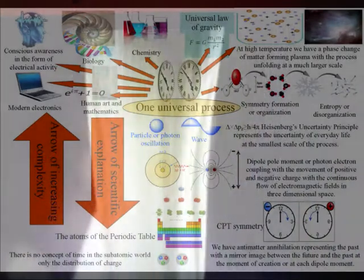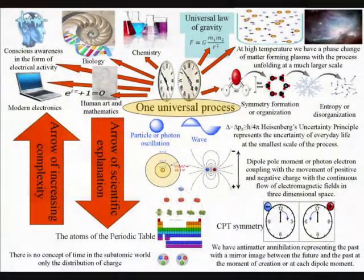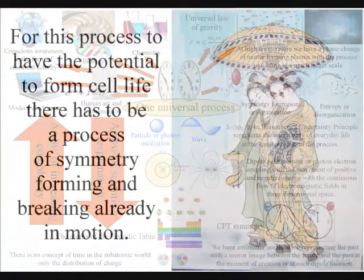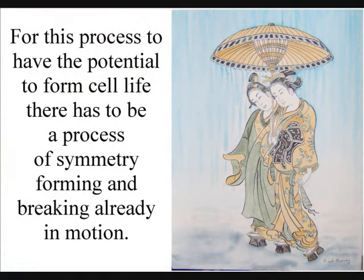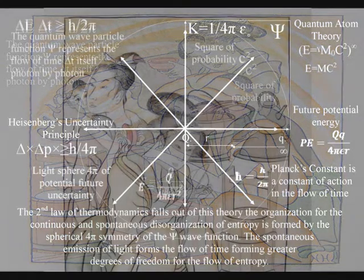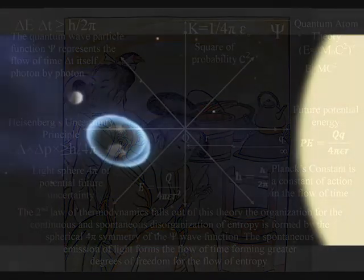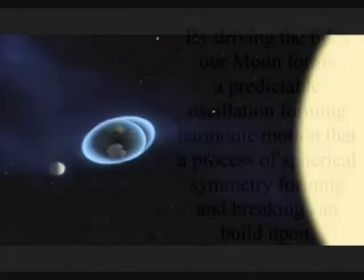The problem is, for this process to have the potential to form cell life, there has to be a process of symmetry forming and breaking already in motion. Otherwise, the process would just form entropy or disorganization in three dimensions. For the earth, this symmetry was in the form of the lunar cycle, forming the motion of the tides.